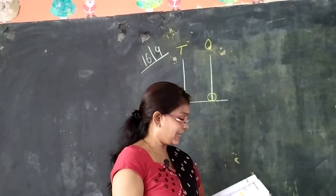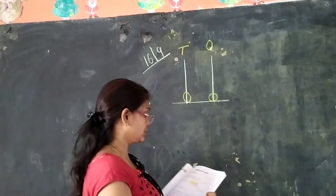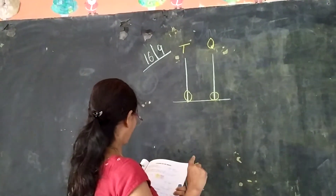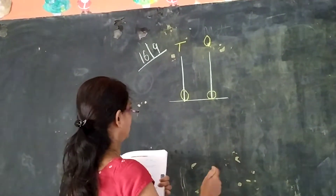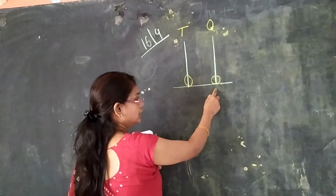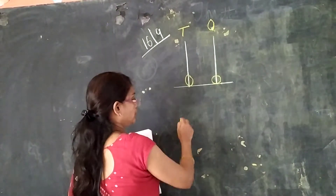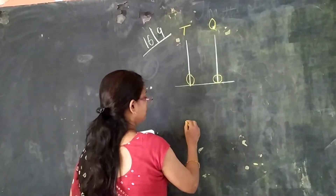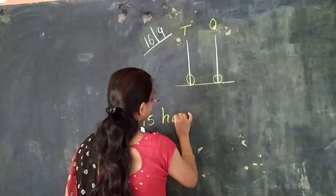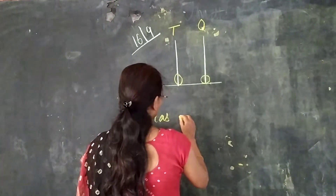So we have fifteen on the abacus here. See children — fifteen has one ten and five ones. Here, for example, I have written on the board children for your clarity. Here we are doing another example: fifteen has one ten and five ones.